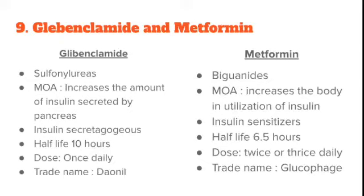The half-life of glibenclamide is 10 hours whereas metformin's is 6.5 hours, so the dosage of glibenclamide is once daily whereas metformin is twice or thrice daily. The trade name of glibenclamide is Daonil and the trade name of metformin is Glucophage. You can add trade names and examples to increase your points.